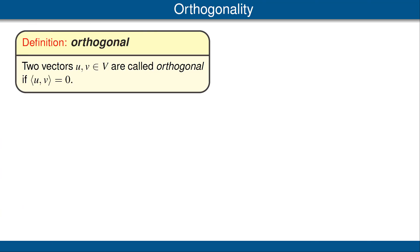Two vectors are called orthogonal if their inner product equals zero. The word orthogonal is just a fancy word that really means perpendicular. In the special case of R², the dot product of two vectors equals the length of the first vector times the length of the second vector times the cosine of the angle between them. The cosine of an angle equals zero if and only if the angle equals π/2 radians or 90 degrees. Thus in R², the inner product of two vectors equals zero if and only if the two vectors are perpendicular in the usual sense.